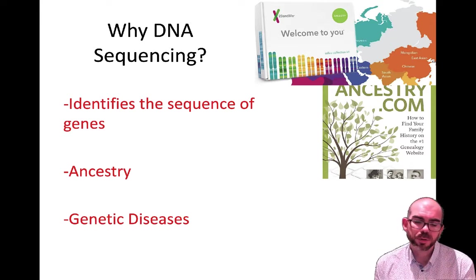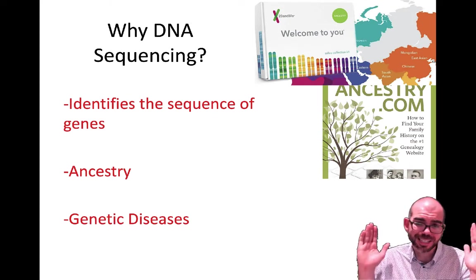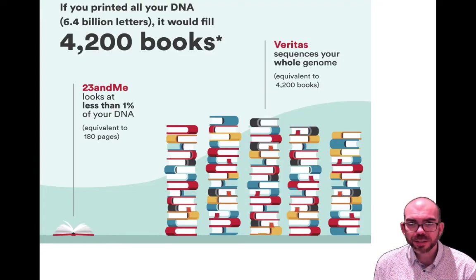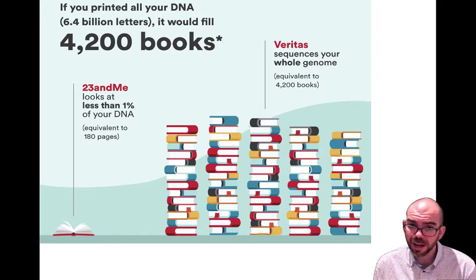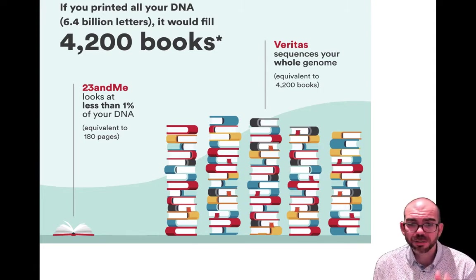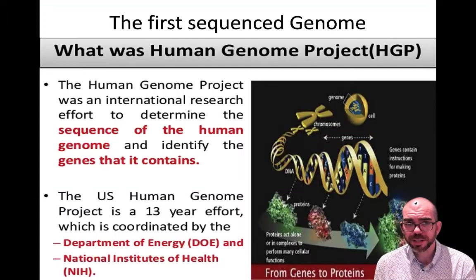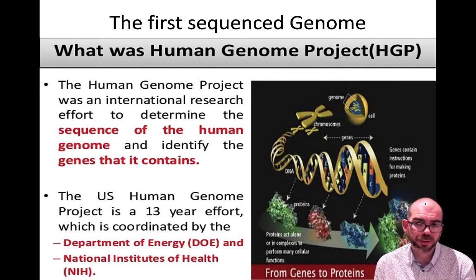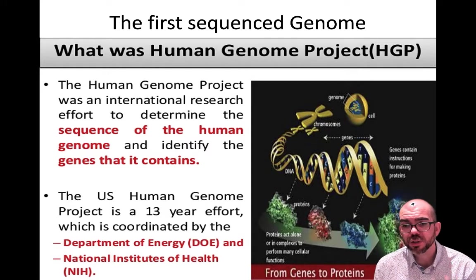What we're discussing here is how to sequence an entire genome — all 3.2 billion letters. If you printed all the information in your genome, it would fill about 4,200 books. 23andMe is only looking at less than 1% of them. The task of sequencing an entire genome is quite daunting. The first time we did this was with the Human Genome Project, a 13-year-long effort coordinated internationally and with the National Institutes of Health, just to sequence the first genome of one person.